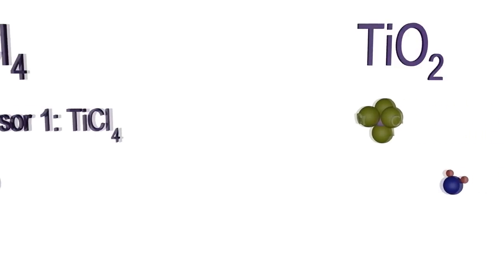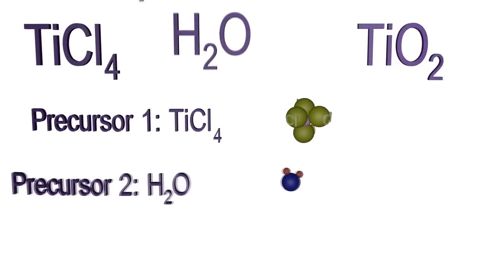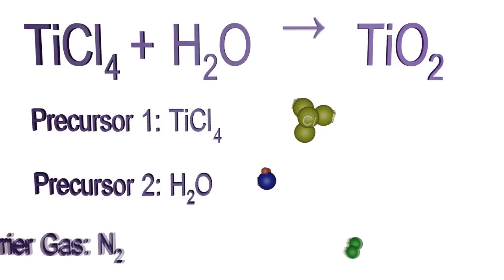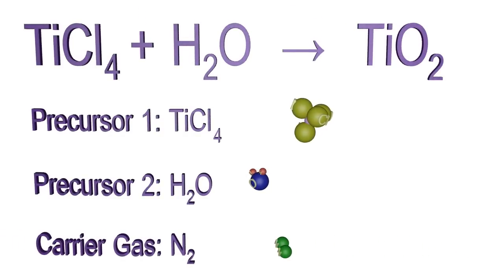An easy example would be the deposition of titanium dioxide on a silicon substrate, by using titanium chloride and water as precursors and nitrogen as carrier gas. In this process, the deposition cycle consists of four steps.